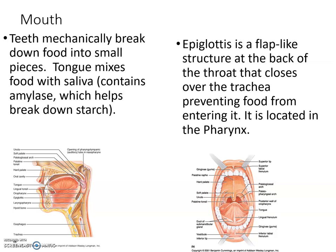We also have something called the epiglottis — a flap-like structure that makes sure food goes down the right tube. You've heard the phrase 'it went down the wrong tube' — that's actually pretty accurate. In the diagram, the epiglottis covers the windpipe or trachea to ensure food goes down the esophagus and not the trachea.